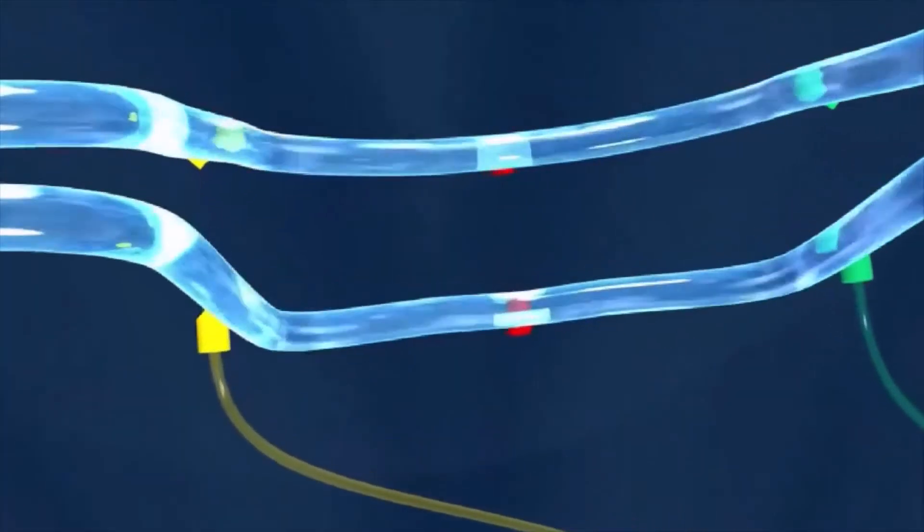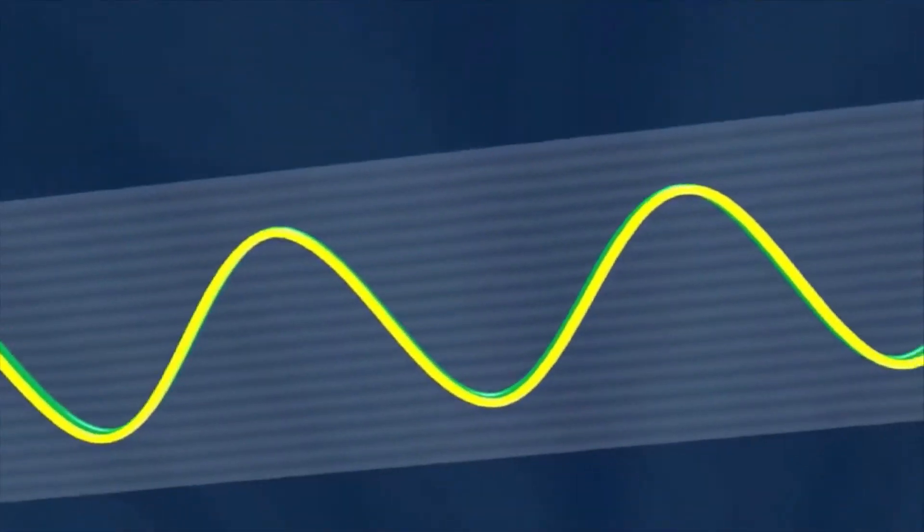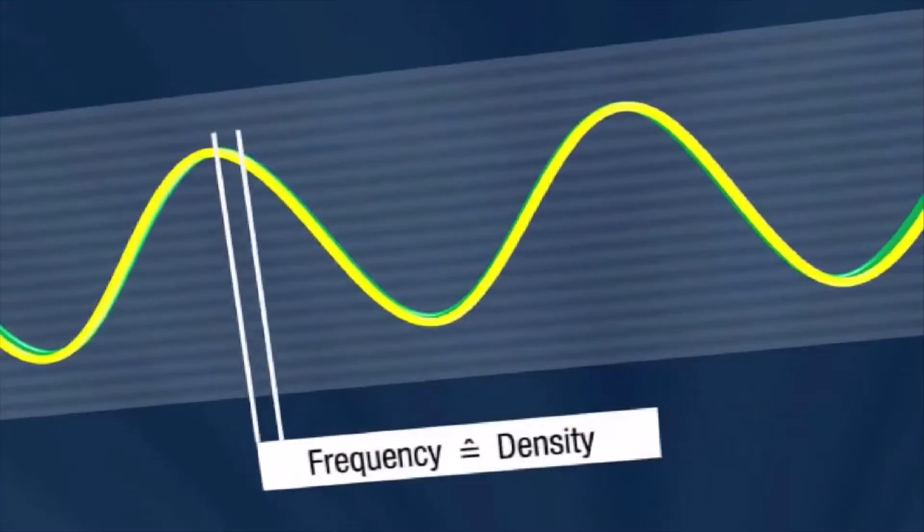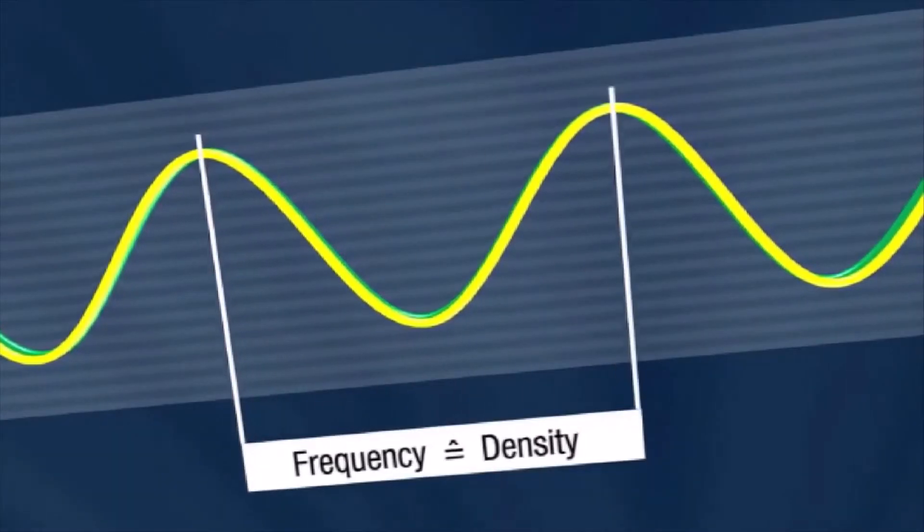Should the density of the media need to be determined, it is simply computed by evaluation of the oscillation frequency of the measuring tubes.